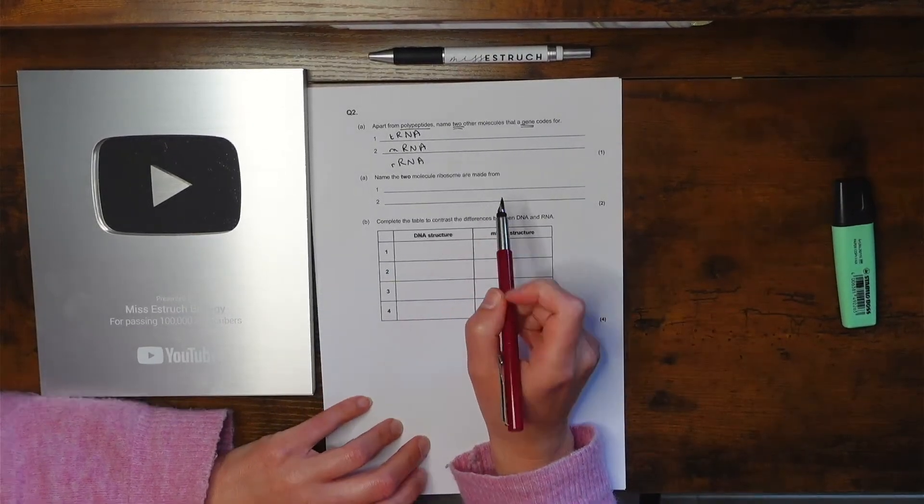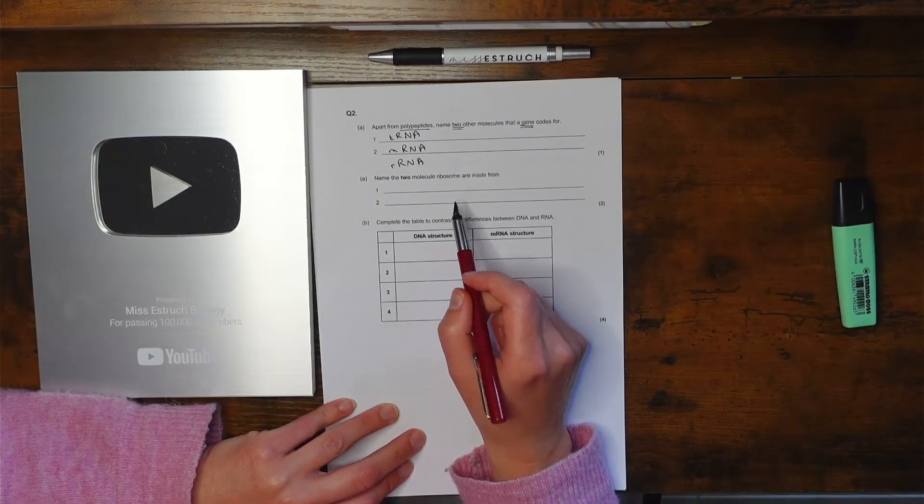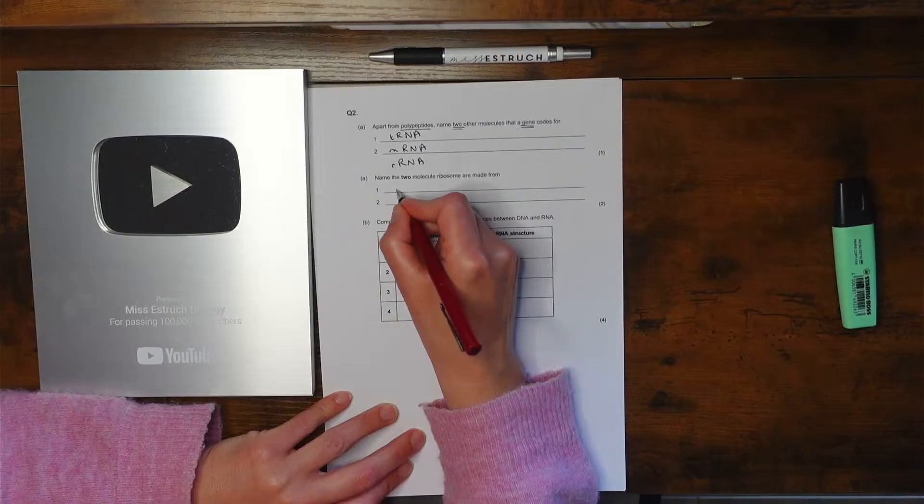Then we've got: name two molecules ribosomes are made from. So this is a small part of the topic for spec, but ribosomes are made up of proteins and rRNA.